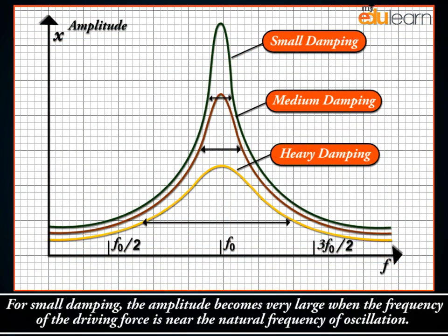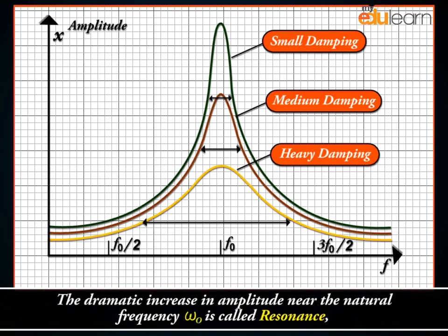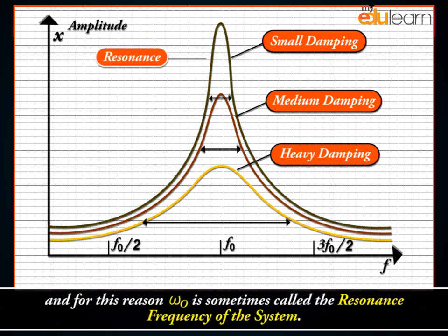For small damping, the amplitude becomes very large when the frequency of the driving force is near the natural frequency of oscillation. The dramatic increase in amplitude near the natural frequency omega 0 is called resonance, and for this reason, omega 0 is sometimes called the resonance frequency of the system.